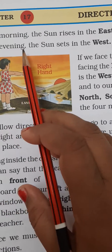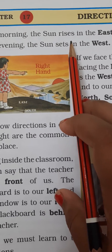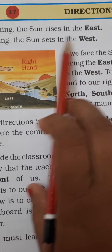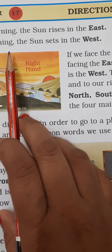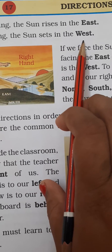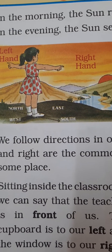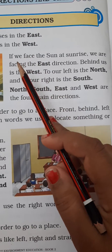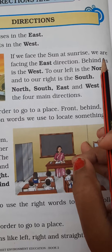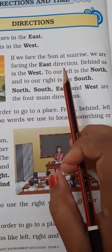In the morning the sun rises in the east. In the evening the sun sets in the west. If we face the sun at sunrise, we are facing the east direction.